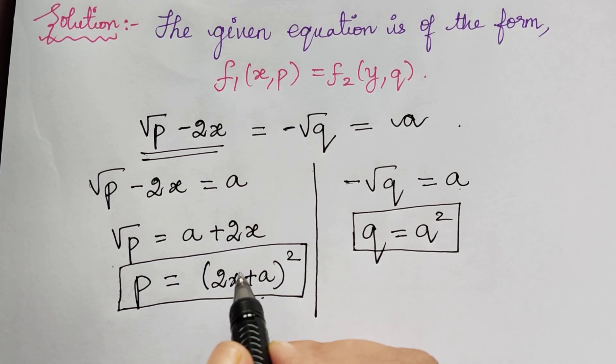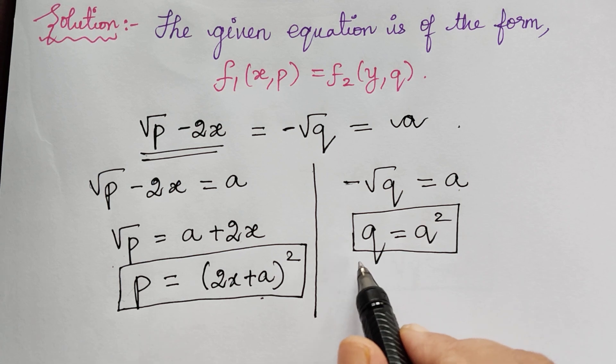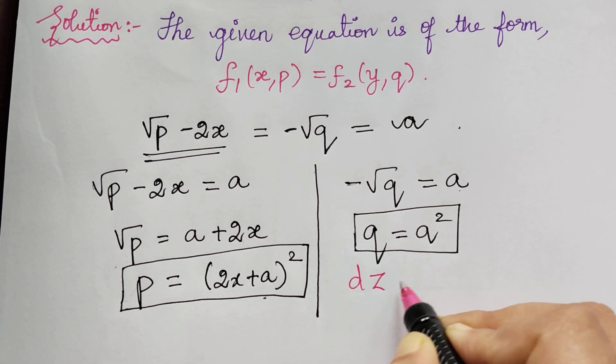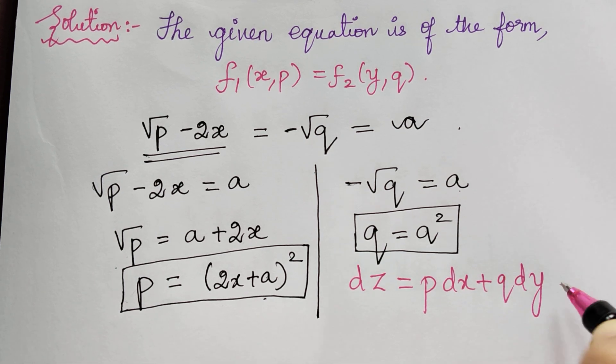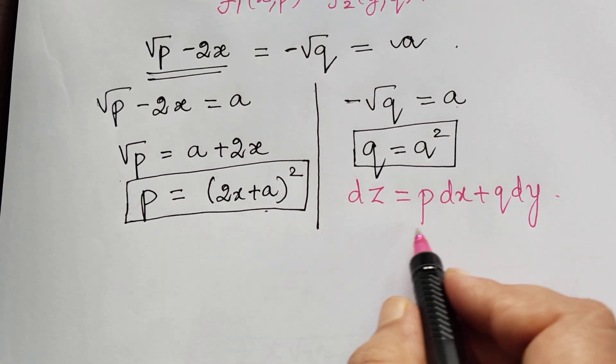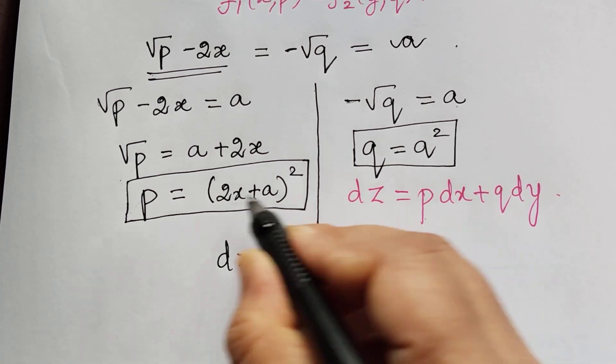Now we have to substitute these two values in the equation dz = p dx + q dy. When we substitute, we get dz = (2x + a)² dx + a² dy.